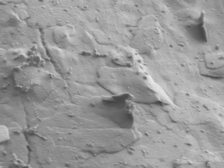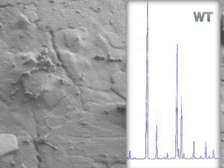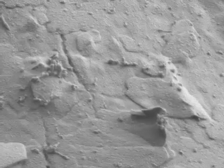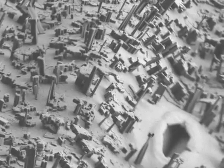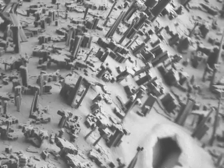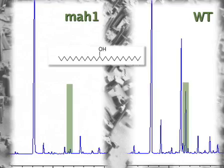For example, the chemical analysis done by Miao shows that in CER4, only the minor component of primary alcohols and their derivative esters are missing, yet the crystals on the CER4 stem are gone. In the case of MAH1, the effect of the mutation in the cytochrome P450 enzyme is that the mutant plants lack two major components of the wax, secondary alcohols and ketones, yet the crystals on the MAH1 plants form normally.